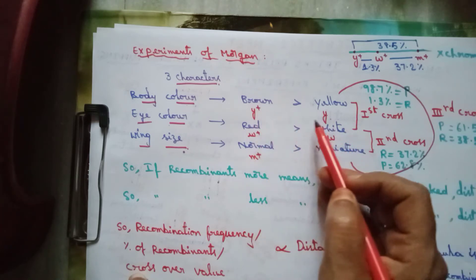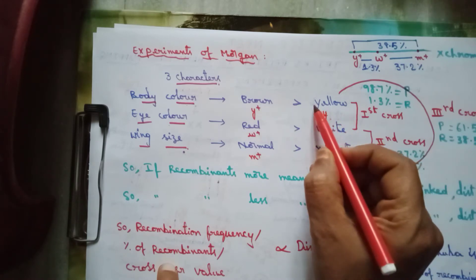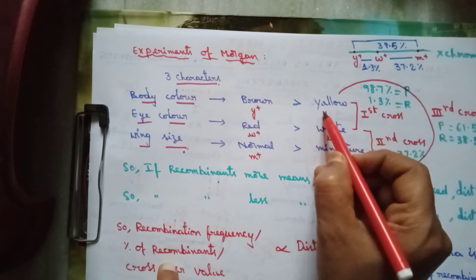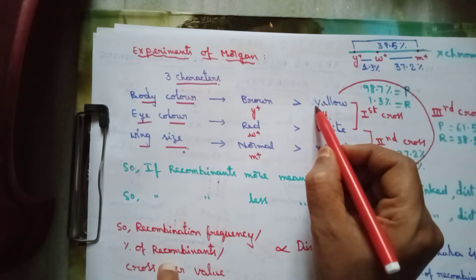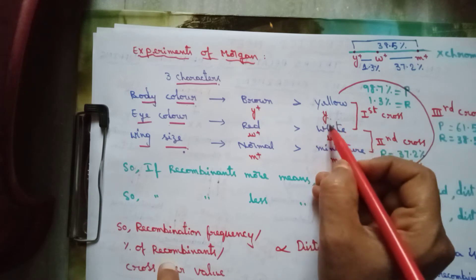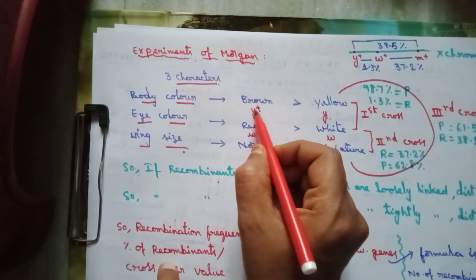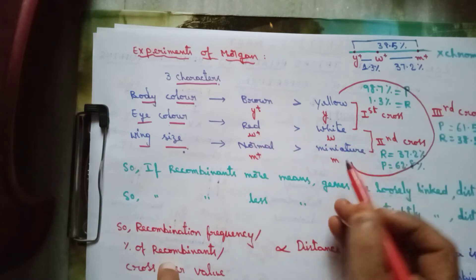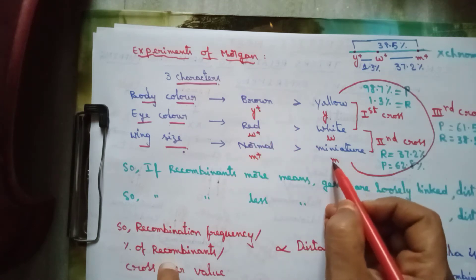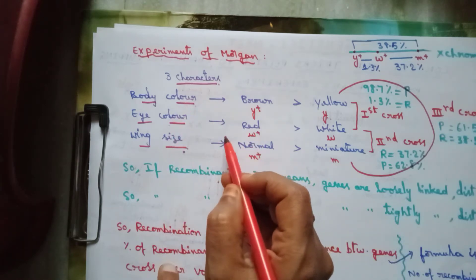These are the phenotypes: brown body color, yellow body color, red eye, white eye, normal wing, and miniature wing. For genotype representation: yellow is represented by small 'y', its dominant brown by 'y+'. White eye is represented by small 'w', red eye by 'w+'. Miniature wing by small 'm', normal wing by 'm+'.